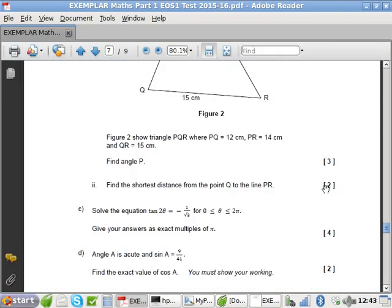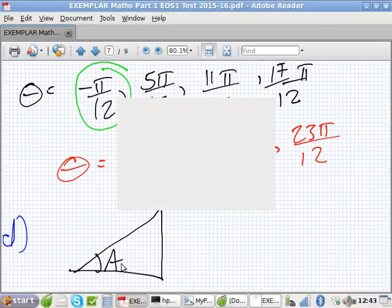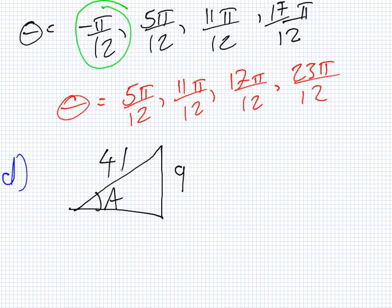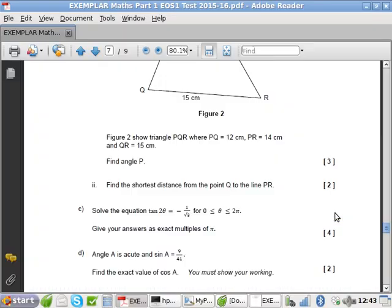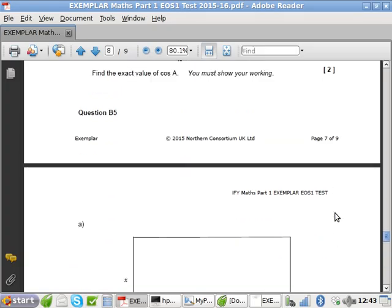Part D. A is acute and sin A is 9 over 41. What is the value of cos A? Right. So sin A is 9 over 41. So that means the opposite is 9 and the hypotenuse is 41. So by using Pythagoras I can get this side. What does it work out like? 40. So then what does cos A equal? 40 over 41. Two marks only. Okay. Right. That was number 4. Okay. So we'll have a look at number 5 now.